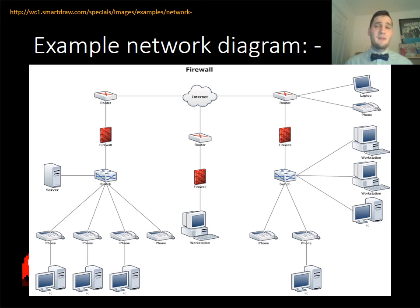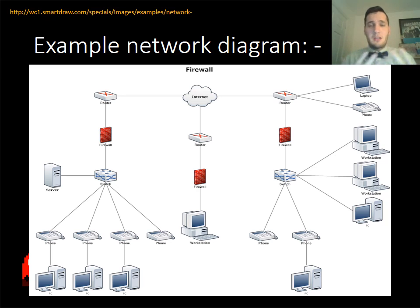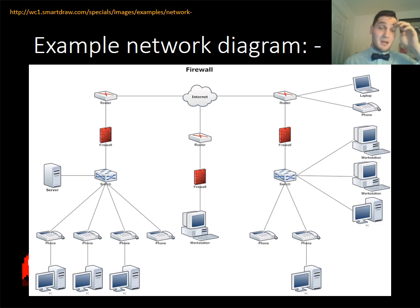Here's an example of a network diagram. You can see the internet with a router on either side connecting the networks together. We've also got something called firewalls, which are usually built into routers or switches now. They're not like an eternal wall of fire that you can't get through — they're there to stop hacking and stop people from entering your network and causing malicious harm.